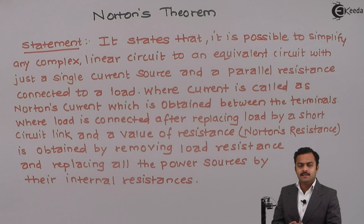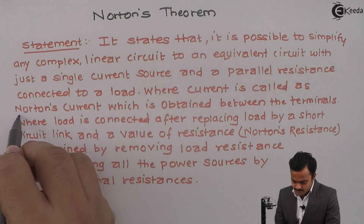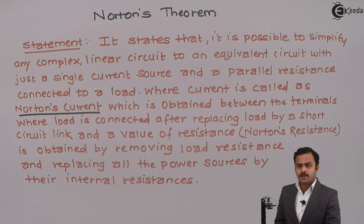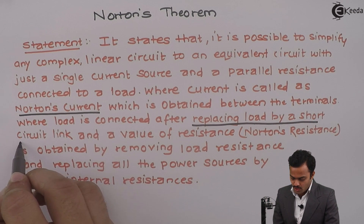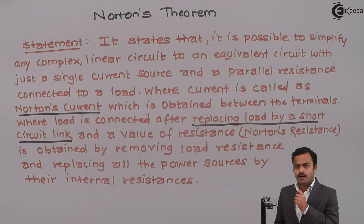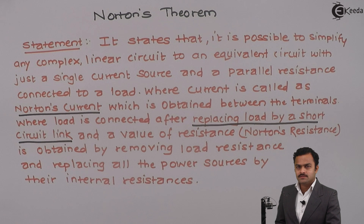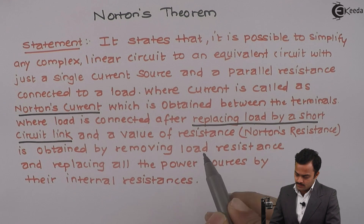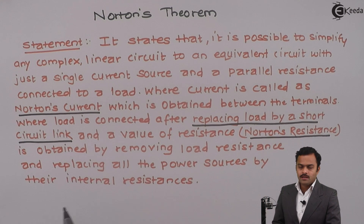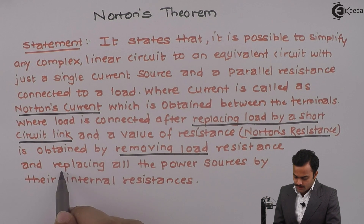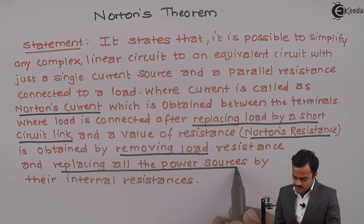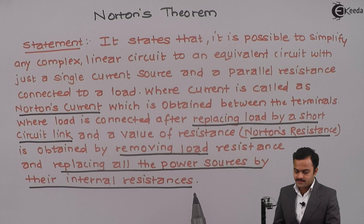The important thing to understand is how to get Norton's current. The procedure is to replace the load by a short circuit link — that means we remove RL and place a wire between the terminals where the load resistance was connected. Norton's resistance is obtained by first removing the load and then replacing all power sources with their internal resistances.